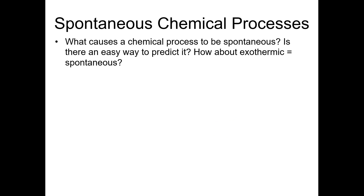What is going to cause a chemical process to be spontaneous? That's the point of this chapter — whether we can look at a forward reaction, look at tabulated data, and determine whether a reaction is spontaneous. Is there some simple way to predict this? One thing that may easily come to mind is the idea that if a reaction is exothermic, that makes it spontaneous. Does that work?